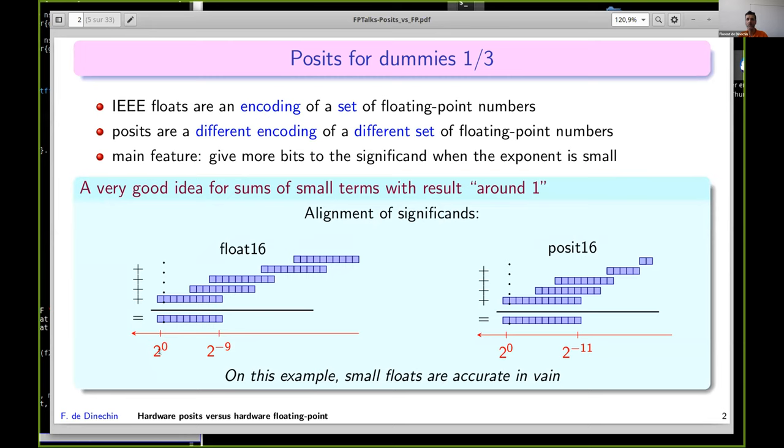Here the result has exponent zero, and I just plot the significands. When doing this summation in float16, you have 10 bits of significand. Posits make the political decision to allocate more bits to numbers in this area and fewer bits to numbers with larger exponents. In this case it's a good idea because you get two extra bits to compute your results. These bits, which you don't compute here, were actually computed in vain by the floating-point standard.